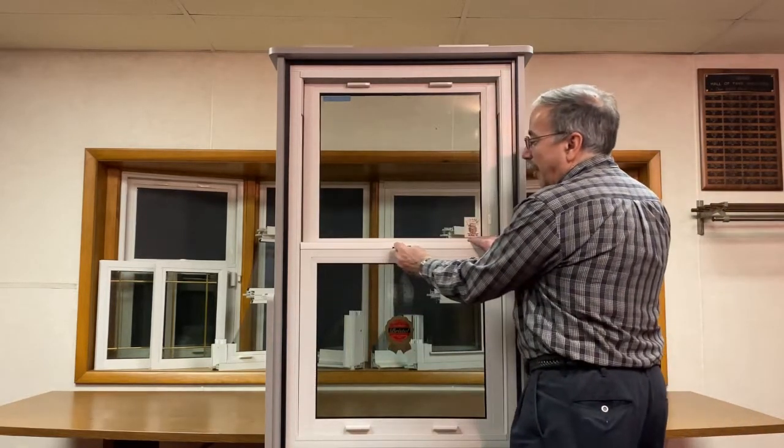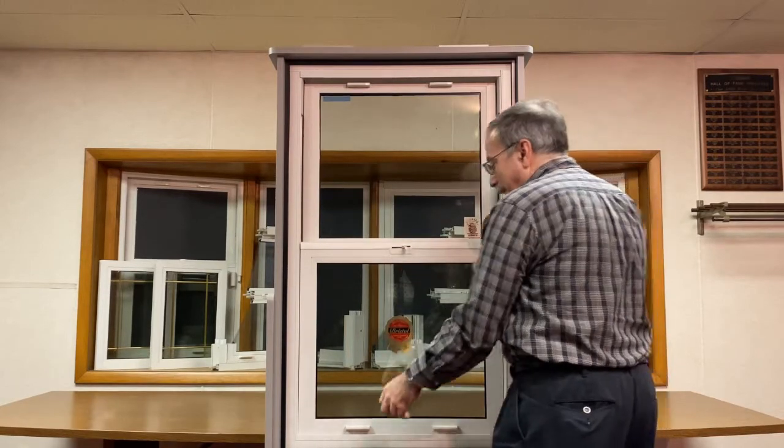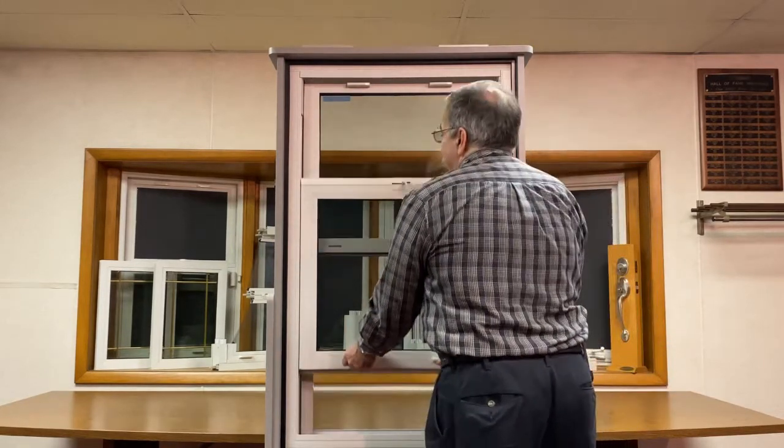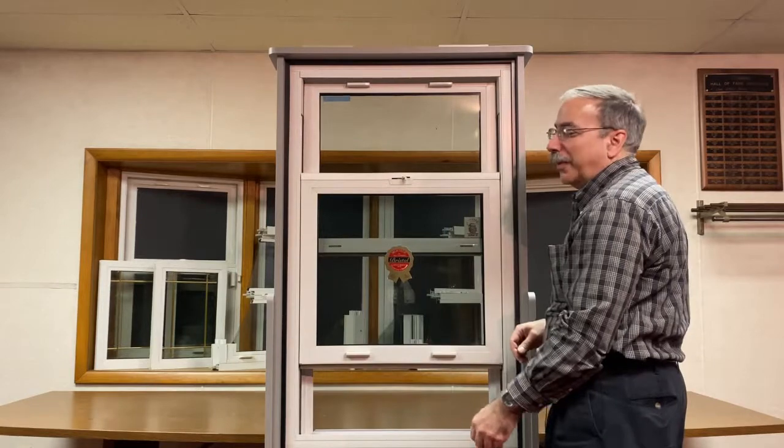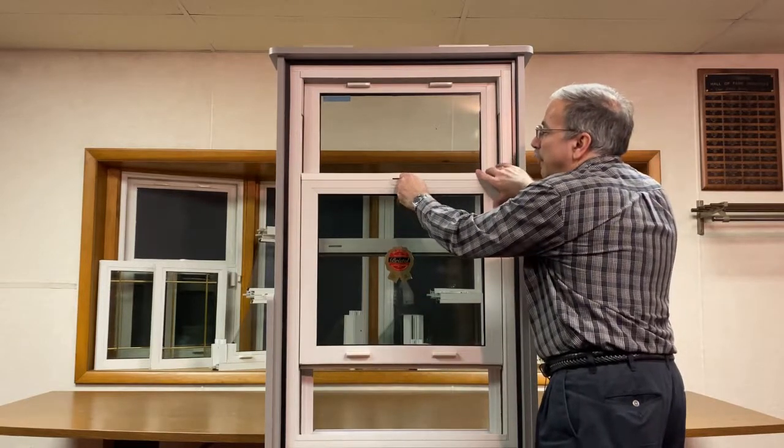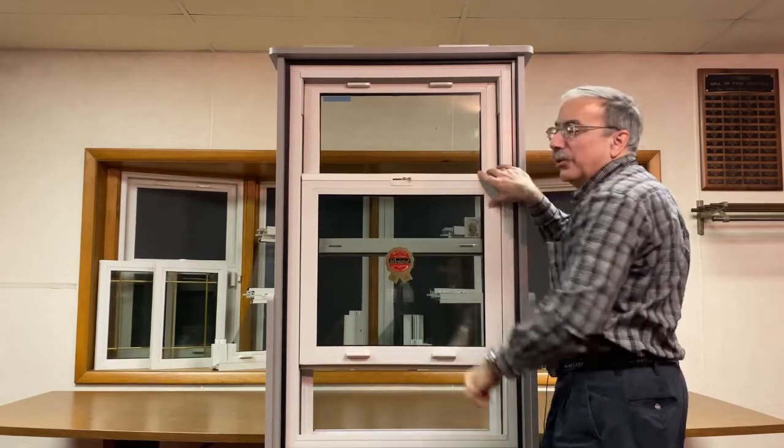You're going to unlock your window, slide your bottom sash up, then slide your Q4 lock into the tilt in position.